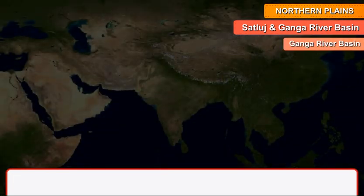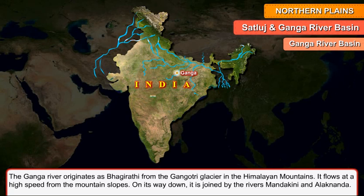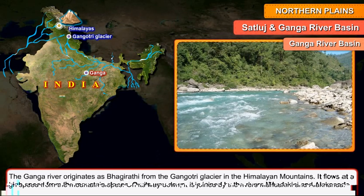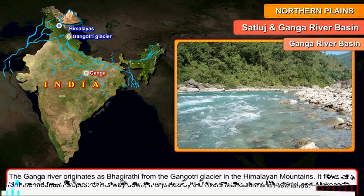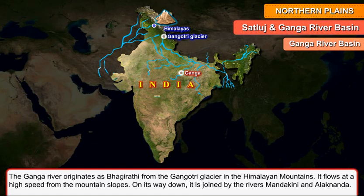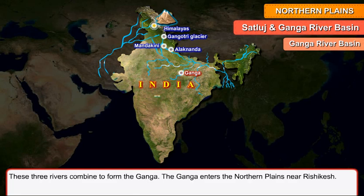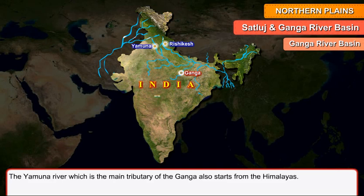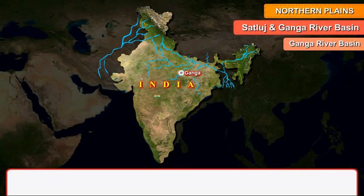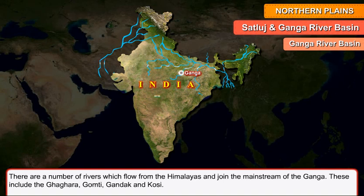The Ganga River originates as Bhagirathi from the Gangotri Glacier in the Himalayan mountains. It flows at high speed down the mountain slopes, and on its way down it is joined by the rivers Mandakini and Alaknanda. These three rivers combine to form the Ganga. The Ganga enters the northern plains near Rishikesh. The Yamuna River, which is the main tributary of the Ganga, also starts from the Himalayas. A number of rivers flow from the Himalayas and join the mainstream of the Ganga.